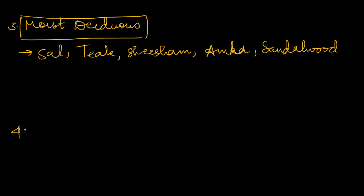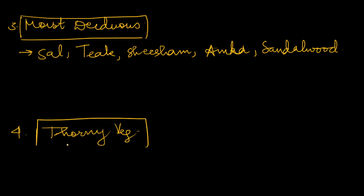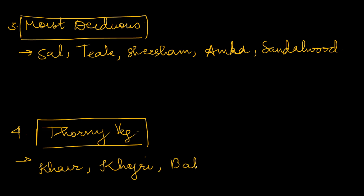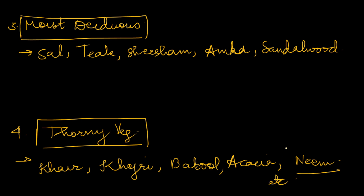Number four, thorny vegetation. In thorny vegetation, you can find trees such as khair, hijri, babool, and acacia. In thorny vegetation you can also find neem, because they are water-conserving elements that can grow in less water. These are some of the important examples of thorny vegetation.